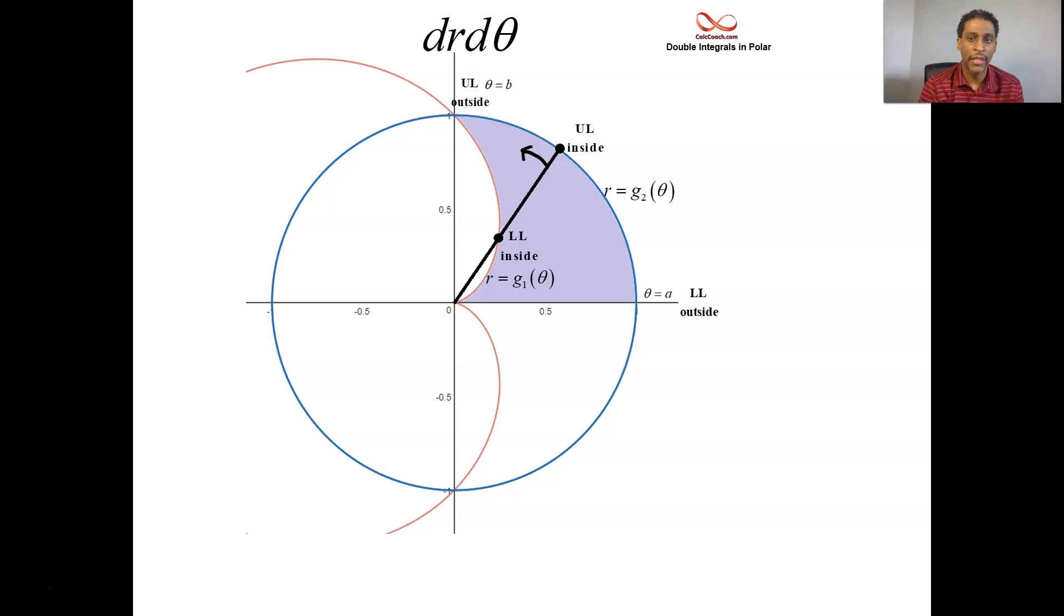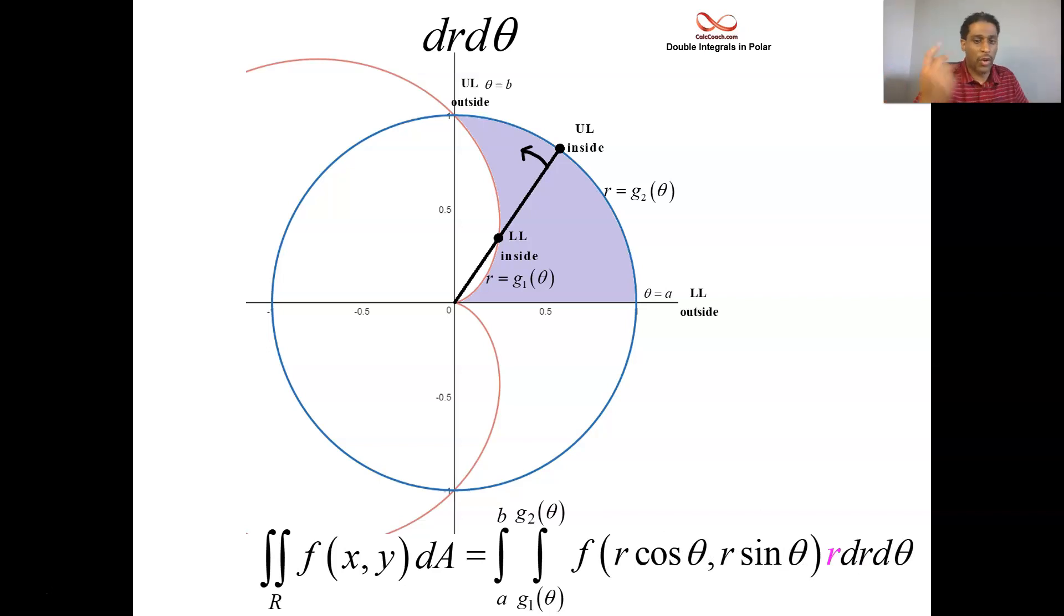We'll get to this example later. But your double integral of your function of x and y over the region R, you can't do this in dx and dy. So you trade it in and you replace all your x's with R cosine theta, replace all your y's with R sine theta, and replace dA with R dr d theta.